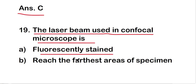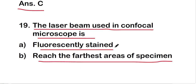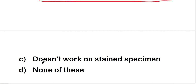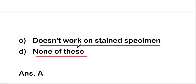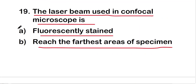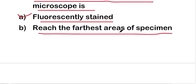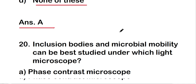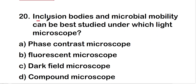The laser beam used in confocal microscopy: is fluorescently stained, reaches the farthest areas of the specimen, doesn't work on stained specimens, or none of the above? The right answer is option A — the laser beam used in confocal microscopy is fluorescently stained.